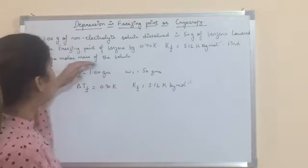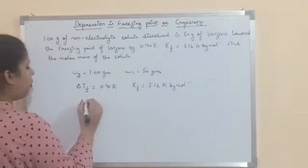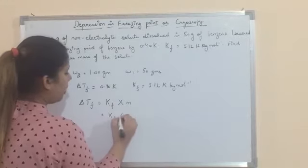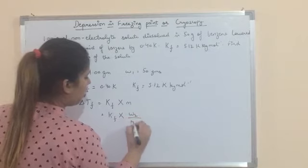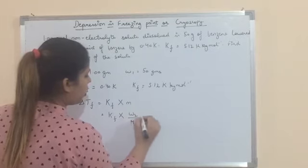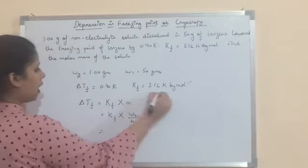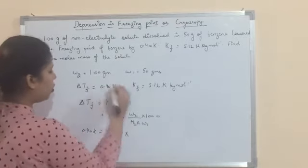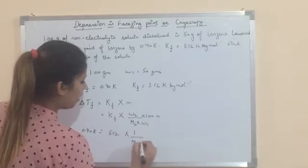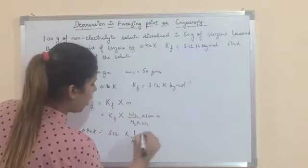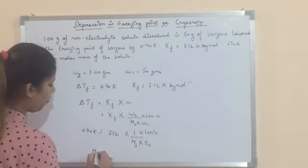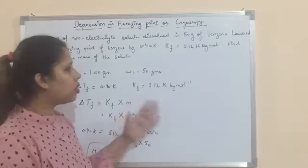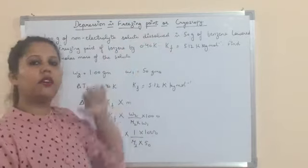Using the formula ΔTf = Kf × m, we put in the value of molality as given mass over molar mass times 1000 divided by mass of solvent: 0.40 = 5.12 × (1 / M₂ × 50) × 1000. Kf = 5.12, ΔTf = 0.40, W₂ = 1 g, W₁ = 50 g × 1000. After solving, you get the molar mass of the solute. This is how you use the formula for depression in freezing point in numericals.